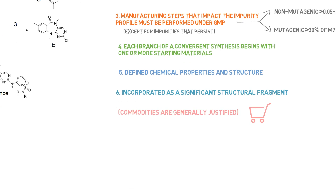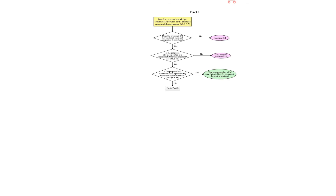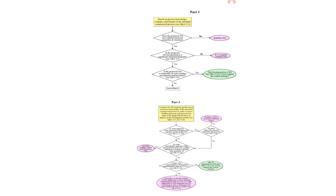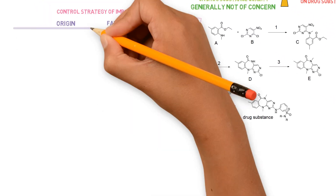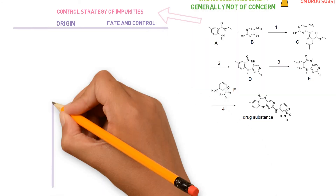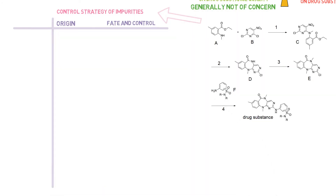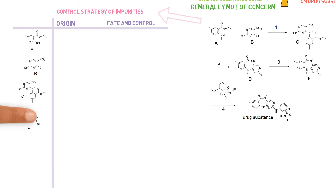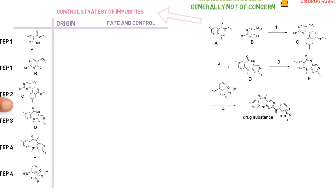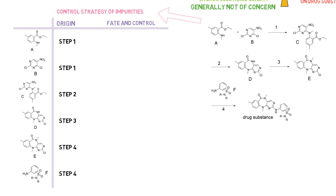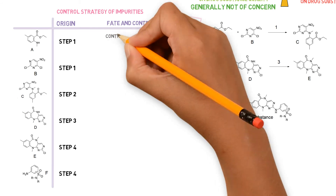The questions and answers document, which complements the Q11 guideline, includes a decision tree which also helps in defining the starting material. Let's see an example of how to define the starting material. First, we need to evaluate the route of synthesis and the control strategy of the impurities. In this case, the potential impurities are A, B, C, D, E, and F. The origin is the step where the impurities come from, and for each one a control strategy must be described.